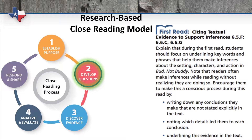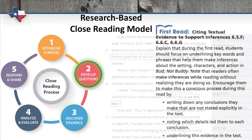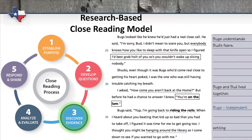Secondly, given the skill objective, the students develop questions about the text and identify what sorts of things we'll be looking for in the piece in order to focus the reading on a skill. Next, we gather evidence by actually reading the piece and annotating the items that we're looking for from steps one and two.